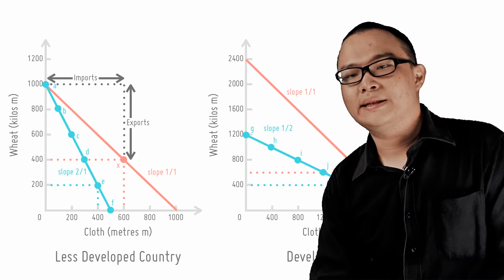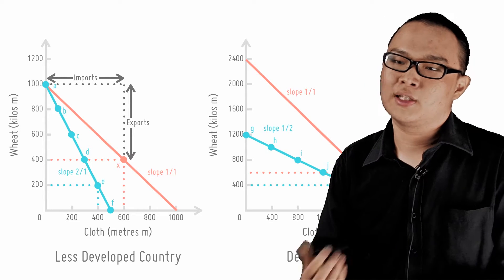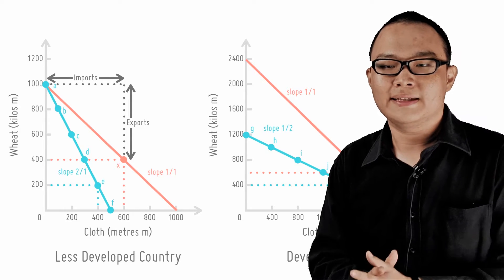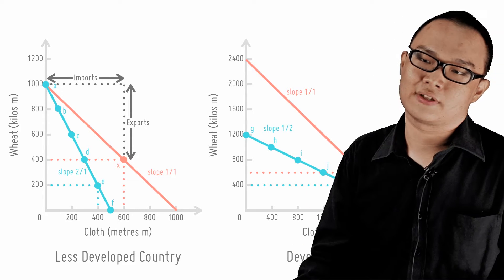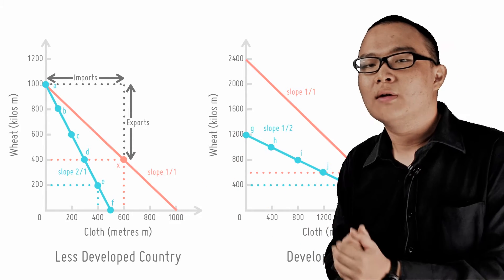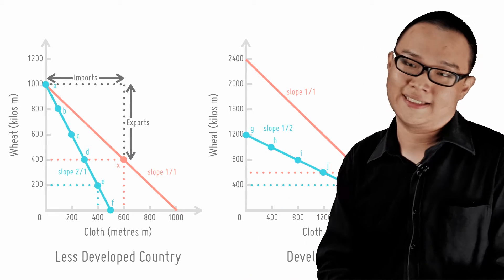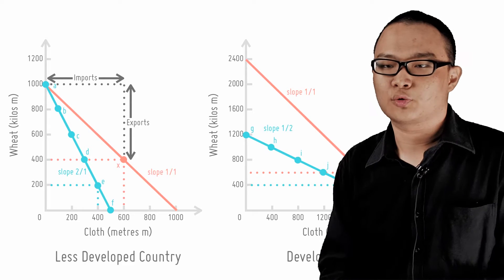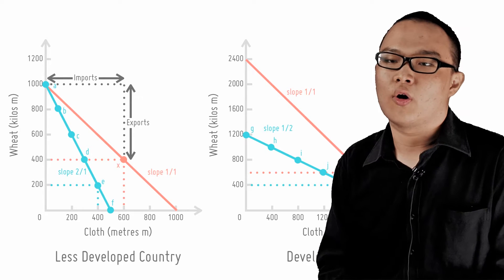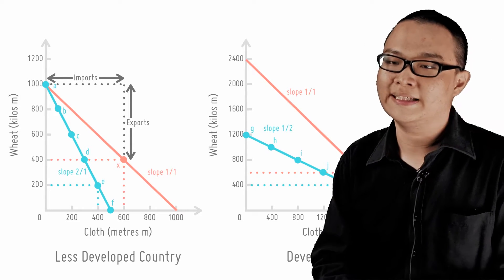Assuming 1 meter of cloth buys 1 kilogram of wheat, that is a 1 to 1 terms of trade, the countries' consumption possibility frontier, the red line, shifts out. Both countries can still only produce within the blue line PPC, but can consume beyond it with trade. With this particular terms of trade, the slope of the CPF, or consumption possibilities frontier, will be 1.